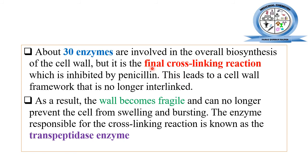The enzyme involved in the final cross-linking step of the peptide linkage is known as the transpeptidase enzyme. Penicillin targets and inhibits this transpeptidase enzyme. Once this enzyme is inhibited, the stable cross-linking will not be formed, the cell wall becomes fragile, and it can no longer protect the cell. Ultimately the cell is destroyed — swelling and lysis occur because the cell wall's main function was to protect the bacterial cell from extreme osmotic pressure and other environmental conditions.